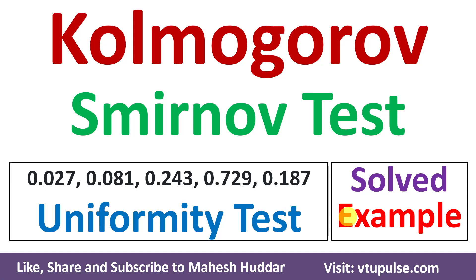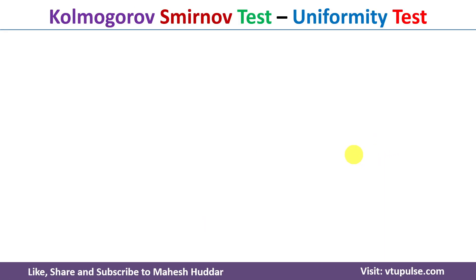Welcome back. In the previous video, I discussed how to generate random numbers using the multiplicative congruential method. In this video, I will discuss how to test whether given random numbers are uniformly distributed or not using the Kolmogorov-Smirnov test, with a simple solved example.